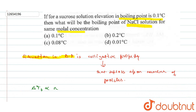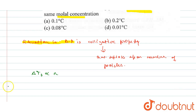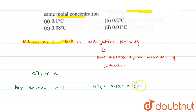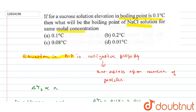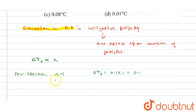Now we have to talk about glucose. What is the case of glucose? How many particles? For glucose, the number of particles is 1. So delta Tb is 0.1 × 1 = 0.1 degree centigrade for the same molar concentration.